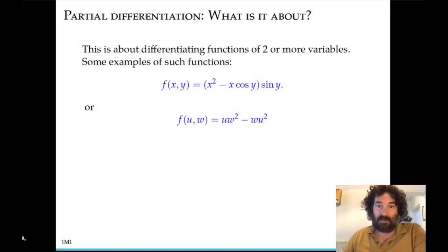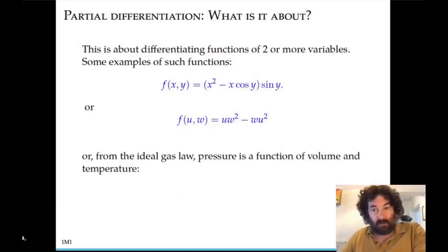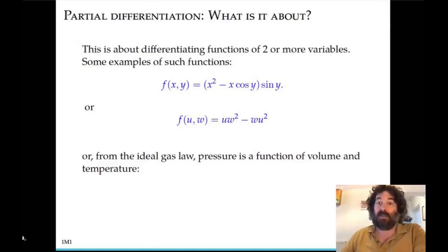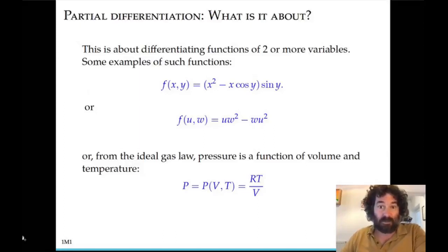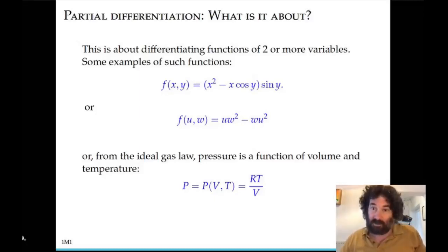Here's another straightforward example, a function of two variables where the variables are u and w. And an example that might come up in an application: the ideal gas law, where we think of pressure as a function of volume and temperature. Pressure p equals r times t over v, where r is a constant bringing together some physical factors, and it multiplies t and divides by v.